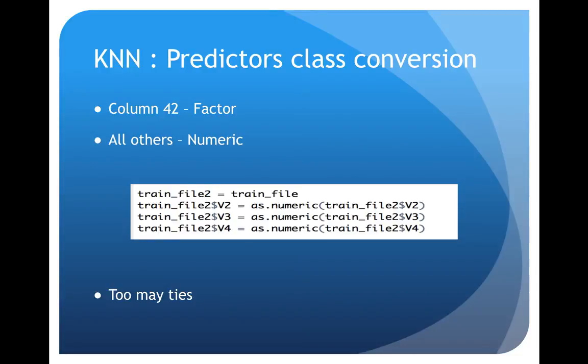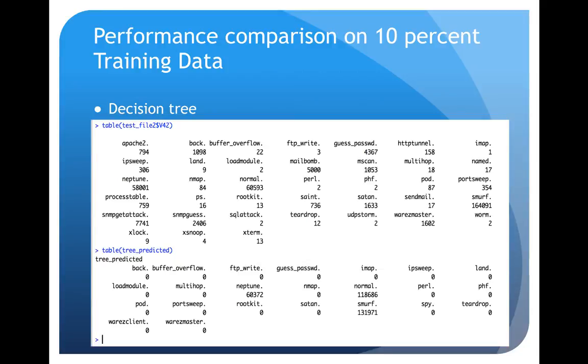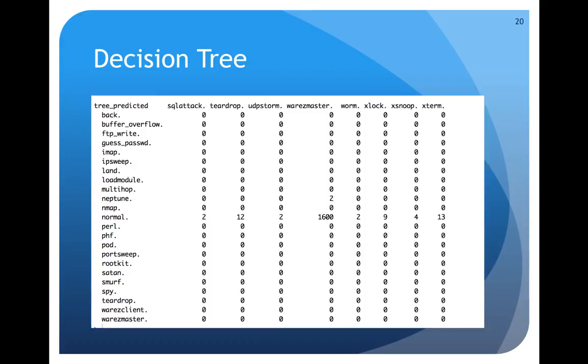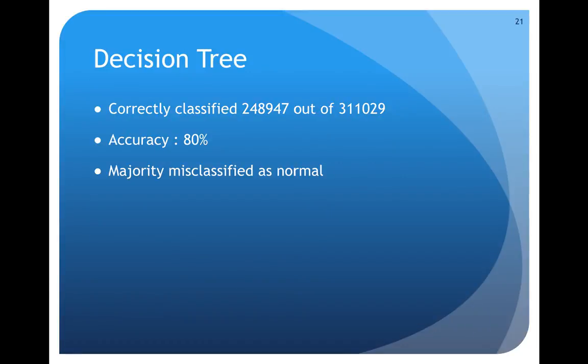Then I tried to run decision tree on the 10 percent training dataset. These are the confusion matrices and the R code snippet for decision trees. With this I could identify 248,947 records correctly, which was about 80 percent accurate. One important observation here is that the data that was misclassified was classified as normal.